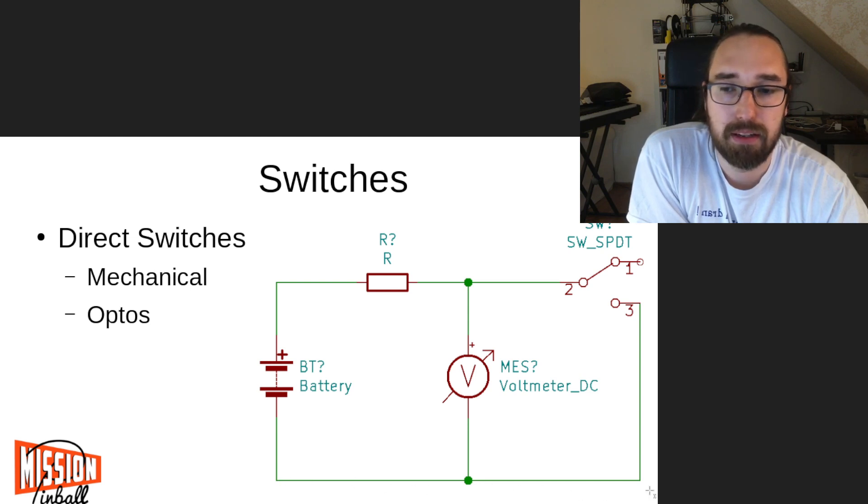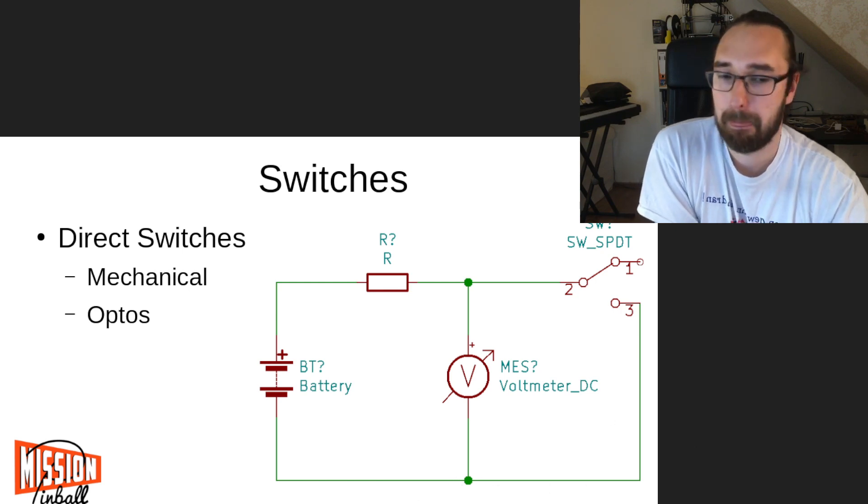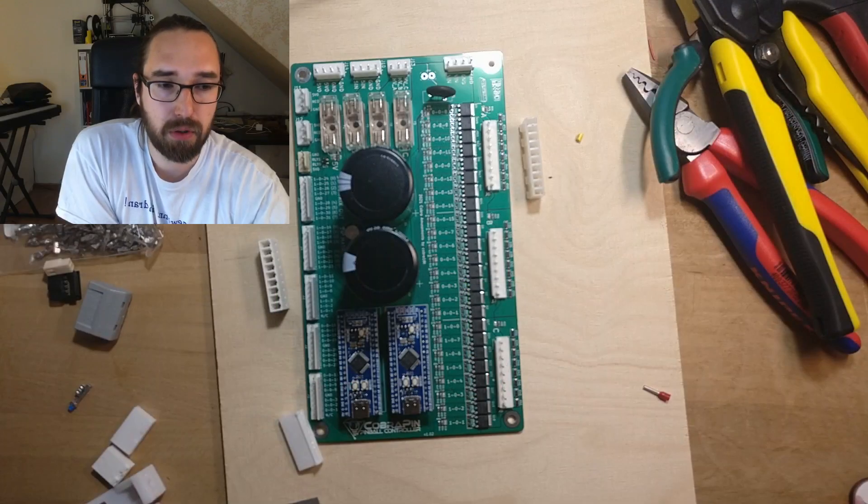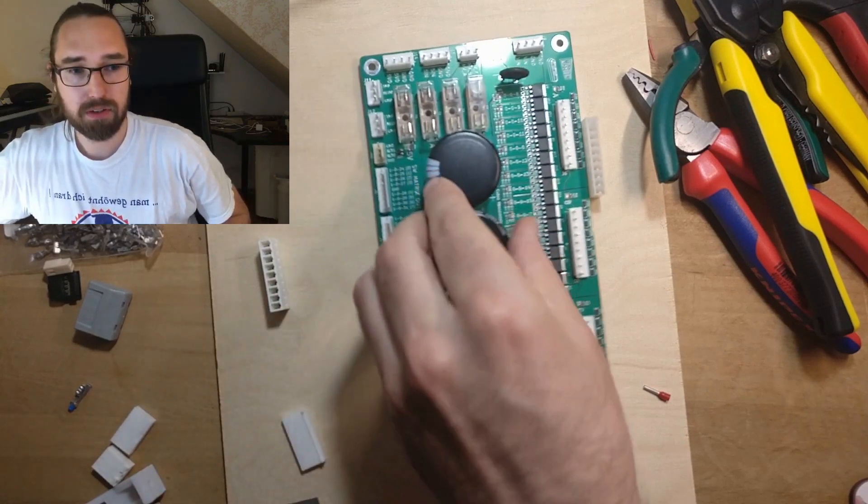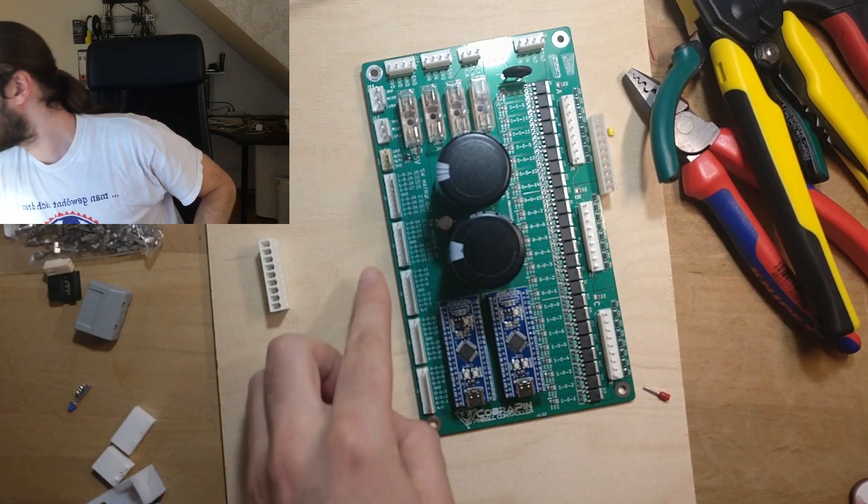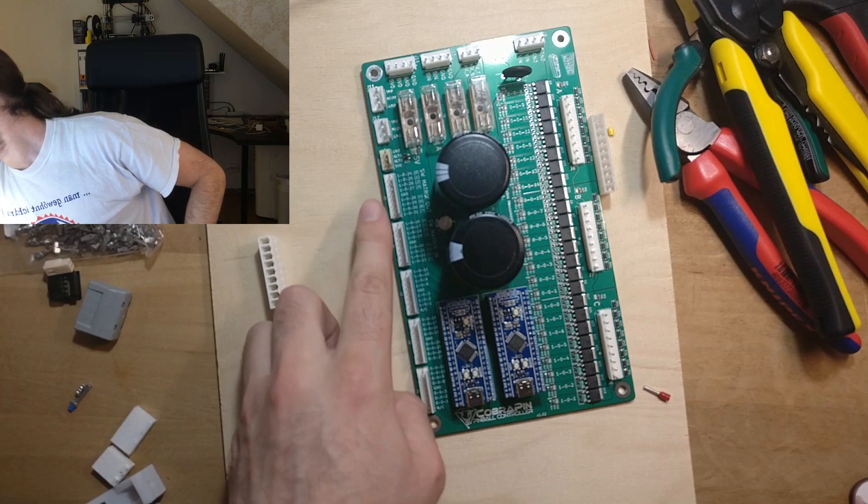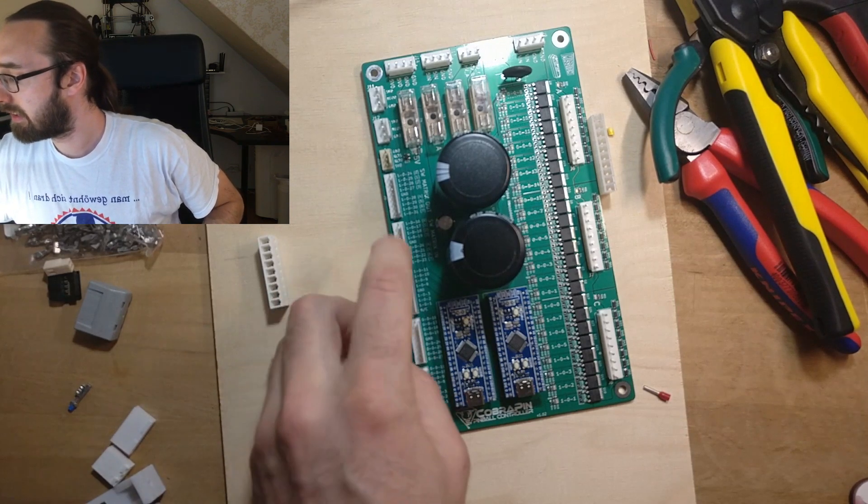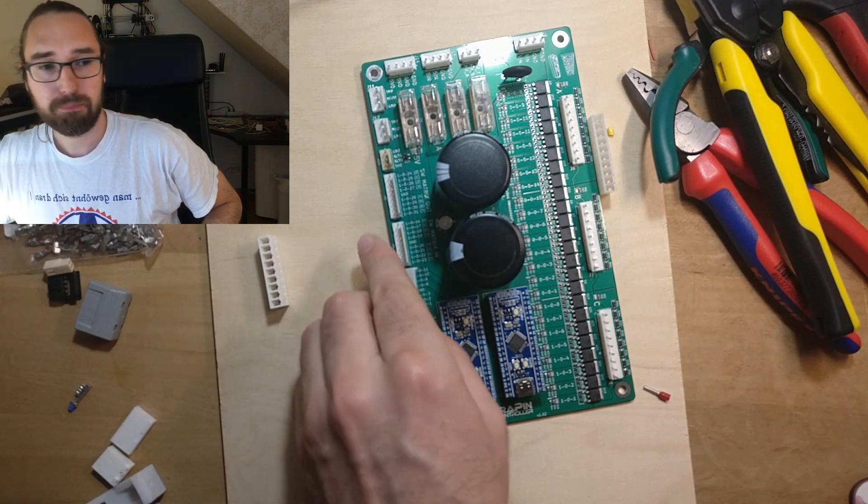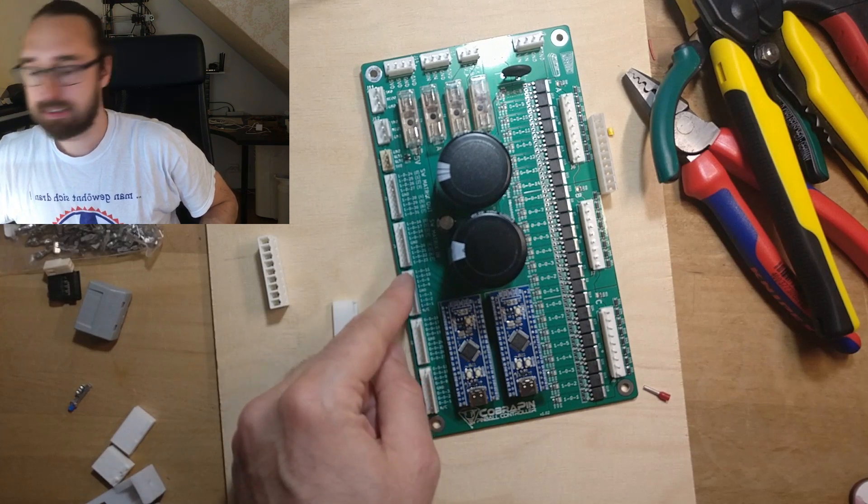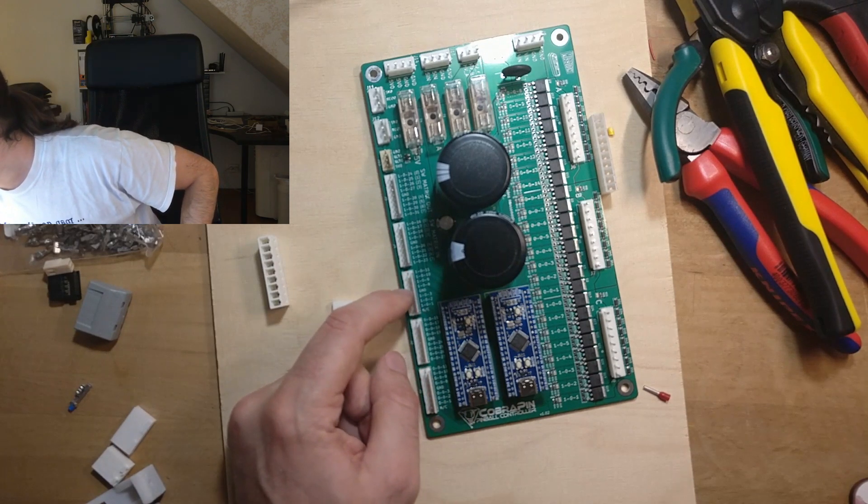You typically share ground on all switches. So imagine multiple of those in parallel, they all share ground. And if you look at a board here, for example, we got two banks or three banks here of inputs. So that's eight switches each here. And this typically has one ground, it's also marked ground here.